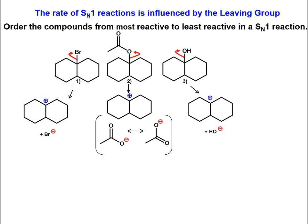Since each reaction is producing the same carbocation, the only difference in the rate of the reaction is the ability of the leaving group to become negatively charged. The bromide ion is the weakest base, followed by the acetate ion, then the hydroxide ion.